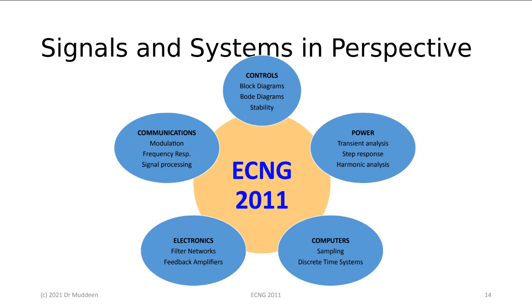Just to give you an idea of where signals and systems is used elsewhere in the program: controls makes use of things like stability issues, Bode diagrams which are frequency response diagrams, block diagrams which are models of systems, and power covers transient analysis, step response, and harmonic analysis. In the computer systems thematic area, they talk about sampling, and computers are a particular type of system called discrete time systems — you'll get an introduction to that here. Digital electronics, which you'll meet in ECNG 2004, is also a discrete time system.